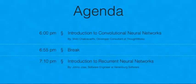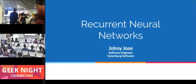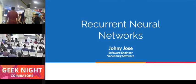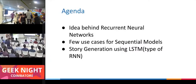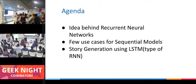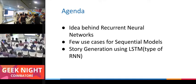I'm going to be talking about recurrent neural networks. It is another type of neural network, different from convolutional neural networks, and it's a bit advanced. The things I'll be covering are: the basic idea behind why recurrent neural networks exist, why to use them, where they're used and some use cases. I'll also be giving a demo on story generation.